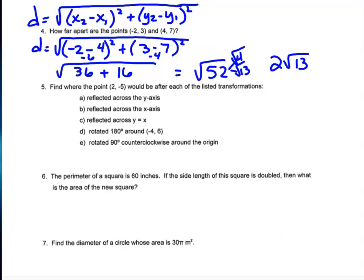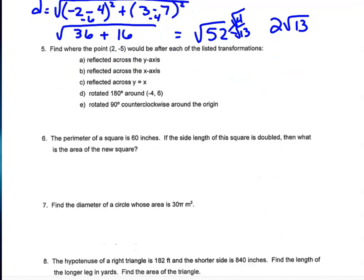Question 5 says find where the point (2, −5) would be after each of the listed transformations.